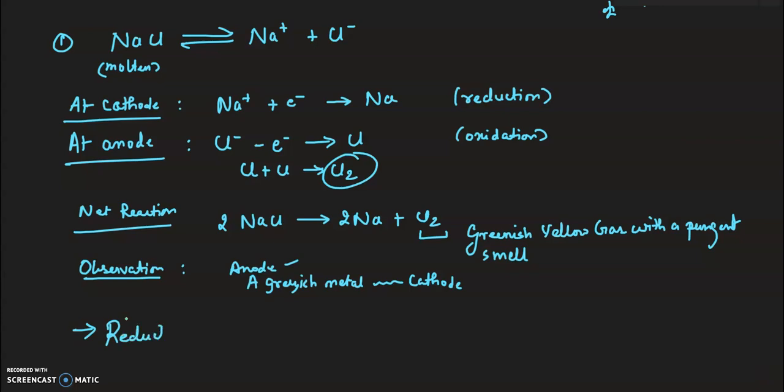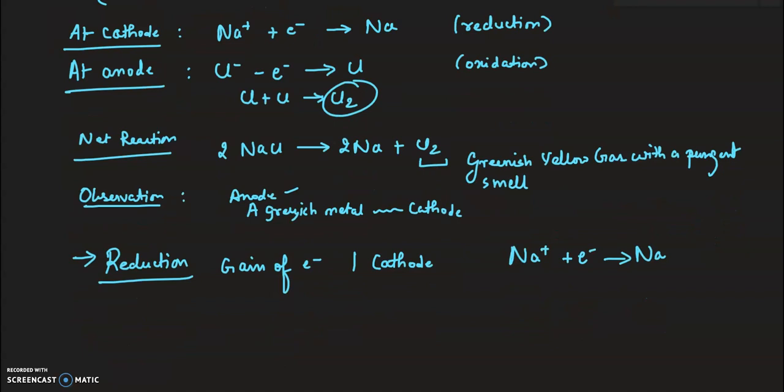Reduction is the process of gain of electrons, and it takes place at the cathode. Oxidation is the process of loss of electrons.